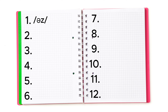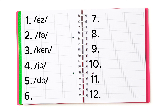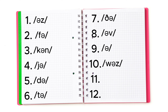Now listen to each weak form and try to identify the word: 'z', 'f', 'can', 'y', 'd', 't', 'the', 'the', 'a', 'was', 'was', 'n'. Okay, let's check the answers. See how many you got correct out of twelve.